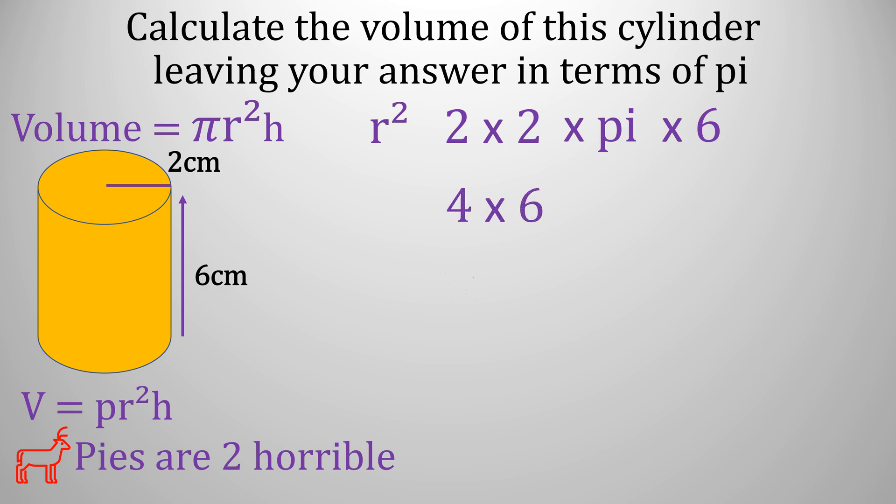Now remember we write the number first and then pi and then the units. This is how we answer in terms of pi. So this would be cubed and it's the volume, and this is the exact answer in terms of pi.